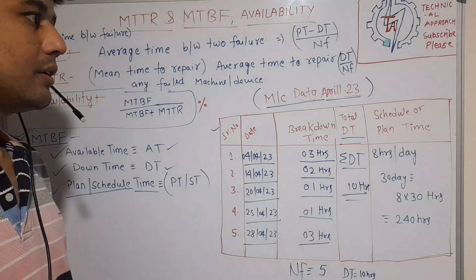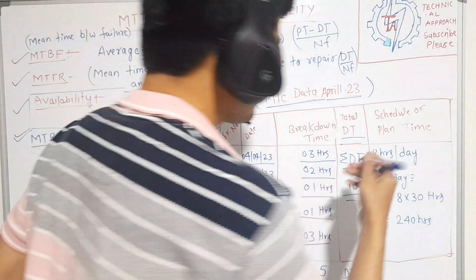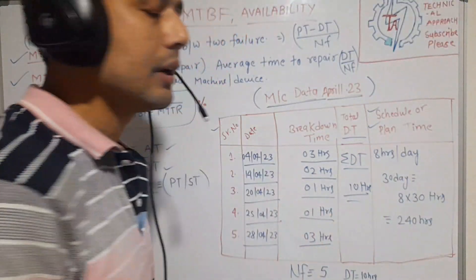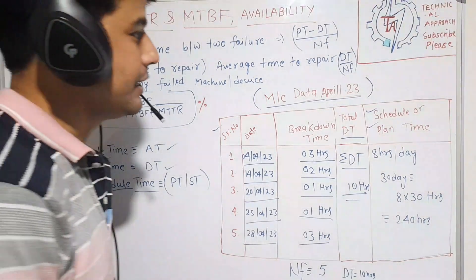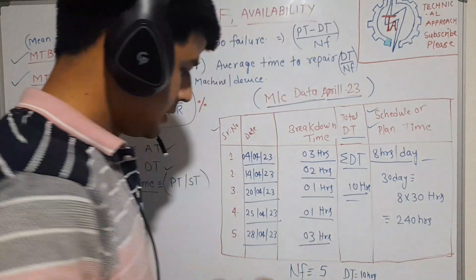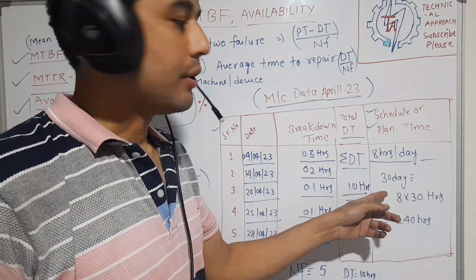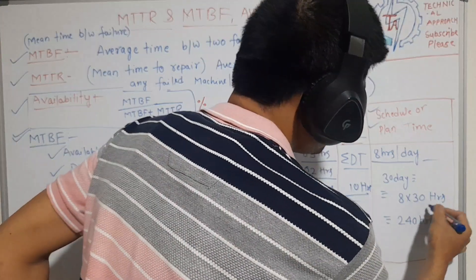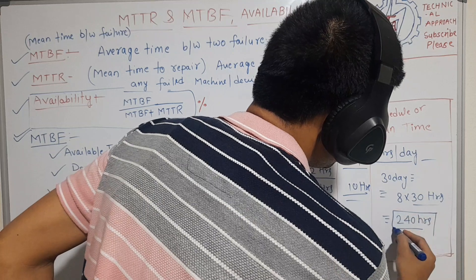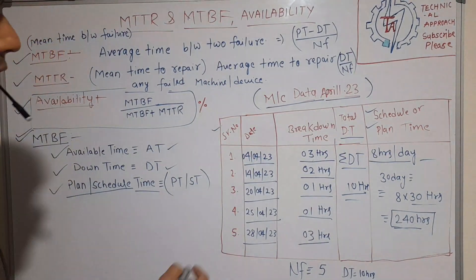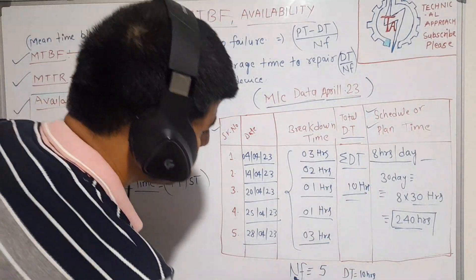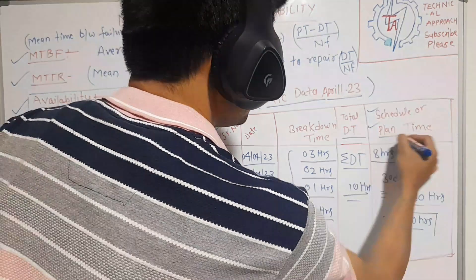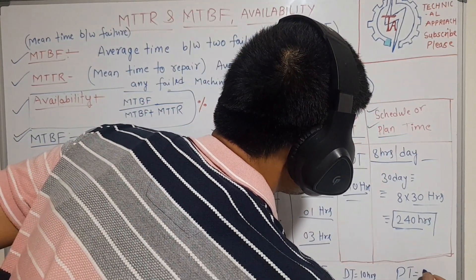Now let's calculate the schedule or plan time. Plan time is defined as 8 hours per day times 30 days, so the total plan time is 240 hours. The number of breakdowns (failures) is 5, the total downtime is 10 hours, and the plan time (PT) is 240 hours.